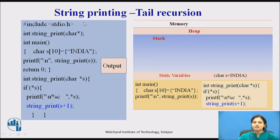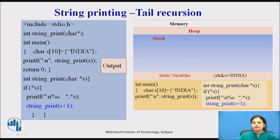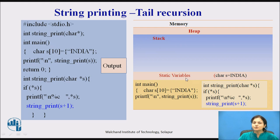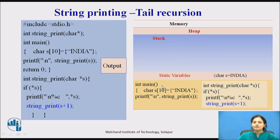An important thing in the recursion part is that we are using a stack. What is the stack? Stack is one place in your memory. In your memory we have our program stored, then whatever variables are declared — those are also stored into the memory as static variables. One place is where we write our program, one place is for static variables, and then we have the stack. These are the parts of your memory where we maintain all these things.